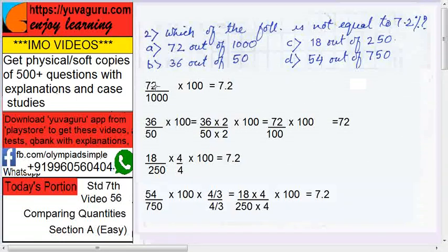B, 36 out of 50, so 36 upon 50 into 100. Now if we have to find a percent, convert everything to 100. Now 50 into 2, so multiply numerator also 36 into 2, that's 72. So 72 upon 100 into 100, because we want percentage. 100, 100 gets cancelled, this is 72.